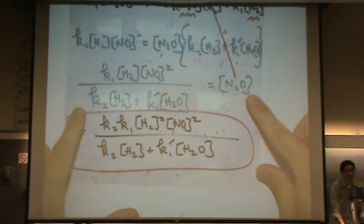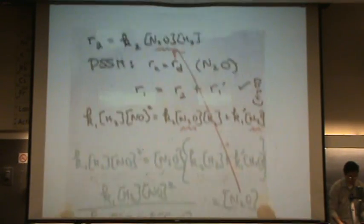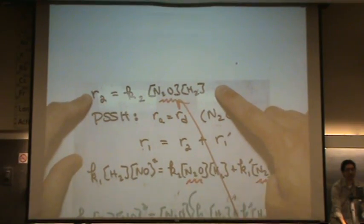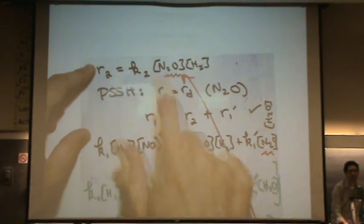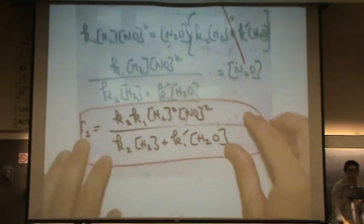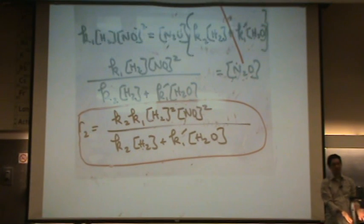So, this is the new one that we have just solved for, this expression using PSSH. Here's my original equation that I plugged it into. So I put this mess right there. Okay? Same thing I did in solving the other one. This is just messier looking. Yes?